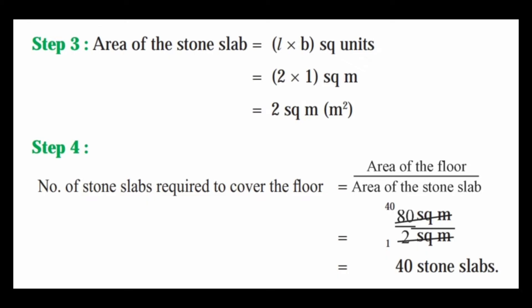Area of the stone slab is equal to 2 into 1 square meter, that is 2 square meter. Number of stone slabs required to cover the floor is equal to area of the floor divided by area of the stone slab. That is 80 square meter divided by 2 square meter, which equals 40 stone slabs.